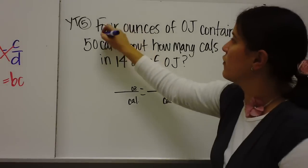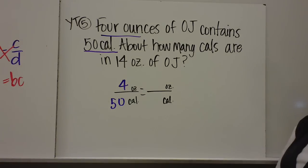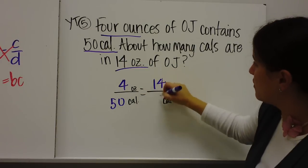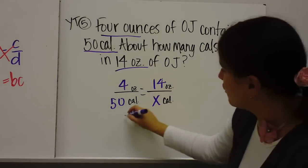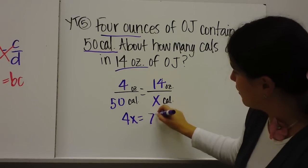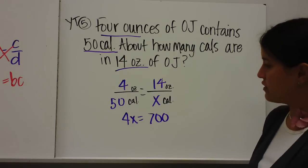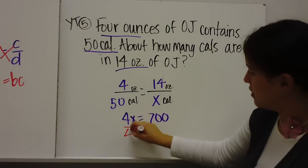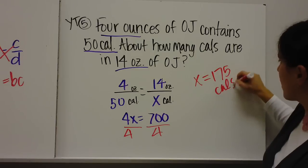So the first thing I do is I put four ounces with 50 calories. About how many calories are in 14 ounces. So put that on top. And then you are going to cross multiply. And you get 4x equals 700. 50 times 14. And then you divide both sides. And x equals 175 calories.